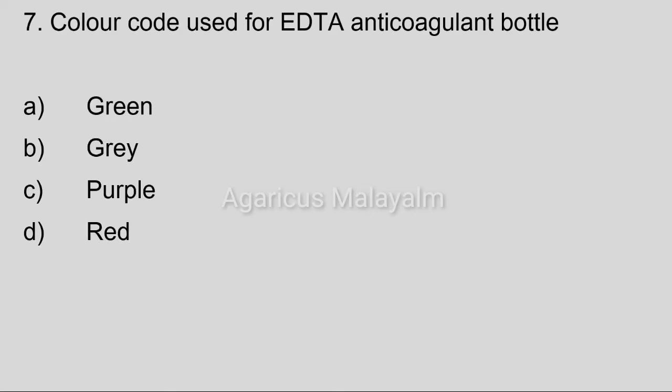Seventh question: Color code used for EDTA anticoagulant bottle. Option A: green. Option B: grey. Option C: purple. Option D: red. Correct answer: Option C, purple. Additional notes — Red top: serological and biochemistry examination. Black top: ESR test. Light blue: coagulation test. White: glucose estimation. Green: bone marrow studies.